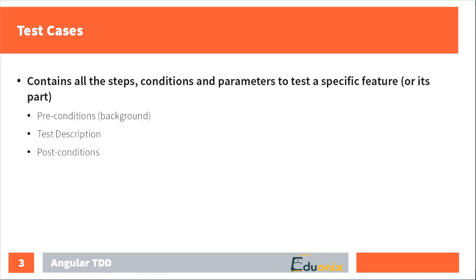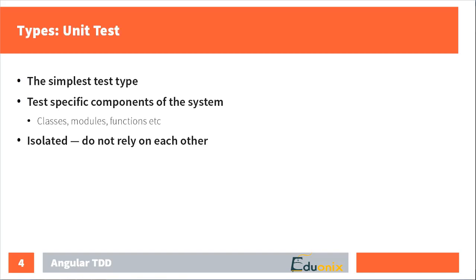That's a test case and we are going to write many test cases while taking this course. The most popular type of test is the unit test, and unit tests are probably the simplest ones. Such tests cover some specific component of your system — for example, you can write a unit test that tests a class, a module, some other component, or maybe a route. They are independent and isolated.